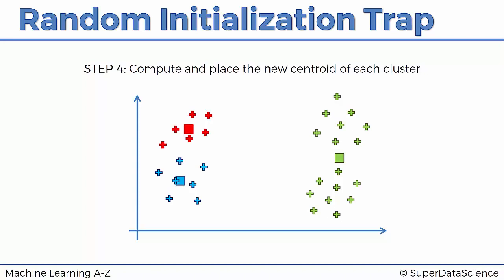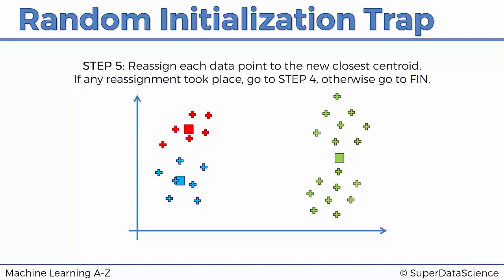And now we're going to perform step five. We're going to reassign each data point to the new closest centroid. Again, we're going to use that quick hack with the lines. Let's see how the lines will look like this time. There's our new equidistant point and these are the equidistant lines. This time you can see that nothing will change. The red points are already in the red corner, blue points are in the blue corner, green points are in the green corner. So nothing is going to change. There will be no reassignment.